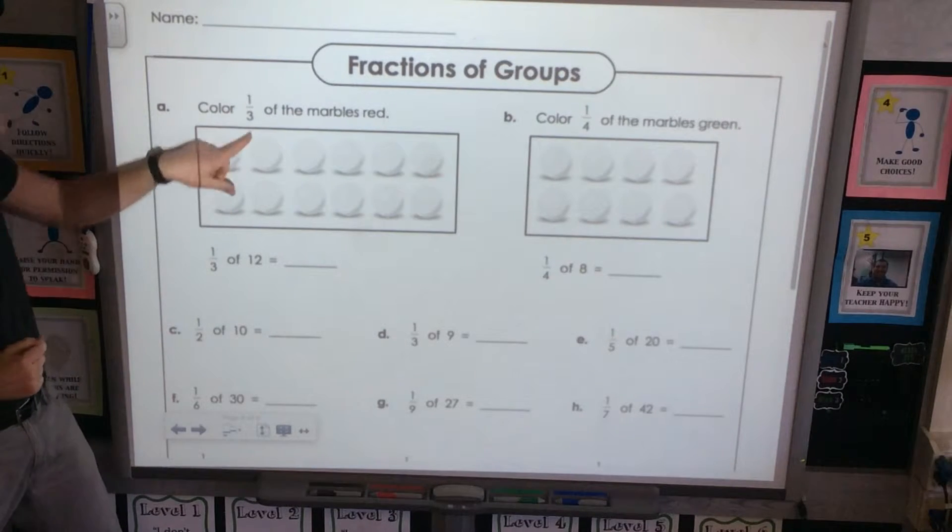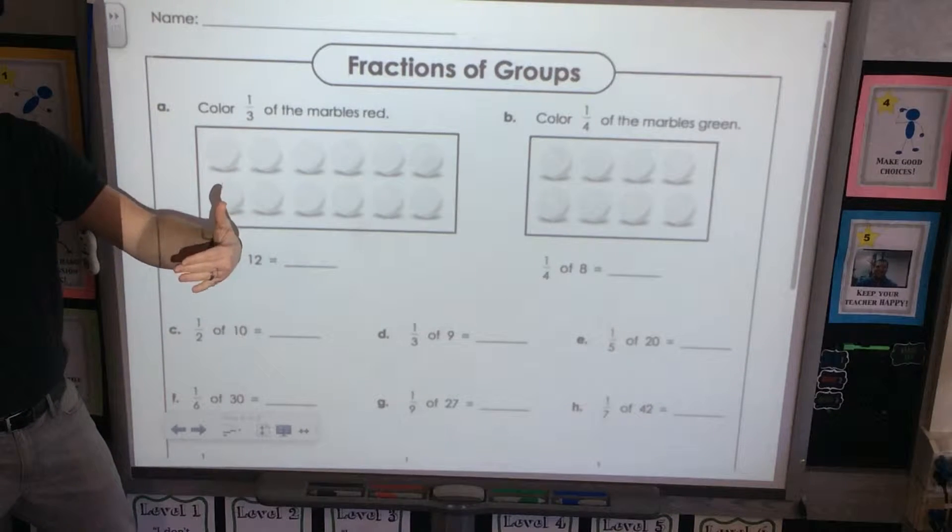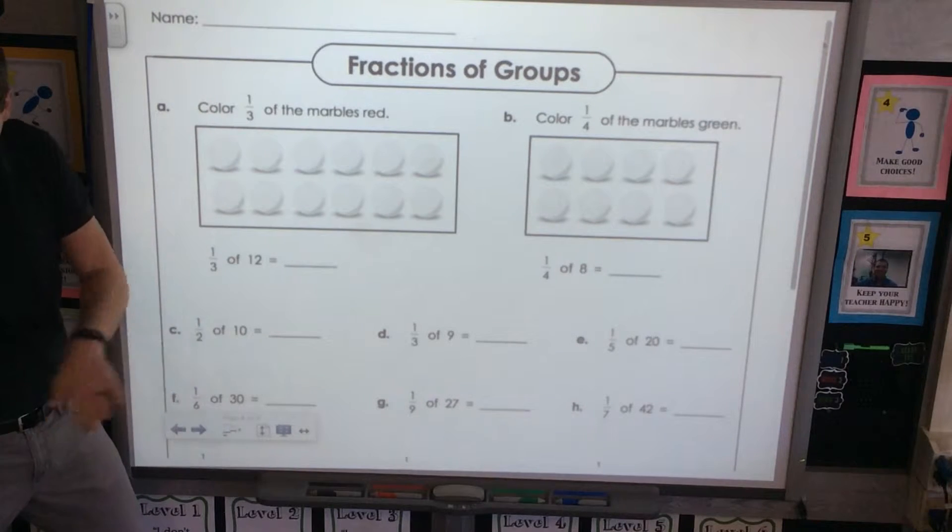What part tells us how many equal groups in the whole we have? That part is called the denominator? What's it called, everyone? The denominator!